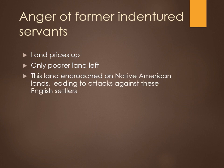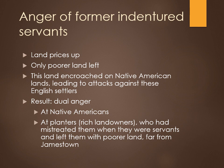They found that the land they could get was bordering on Native American lands, and that led to attacks against these English settlers by Native Americans who were very concerned about their land being encroached upon. The result is that these former indentured servants were angry — angry at two different groups: at Native Americans who had sometimes attacked them, but also at the planters, the rich landowners who had mistreated them horribly when they were servants and then left them with poorer land far from the capital, Jamestown. What they had worked and bled for so long was now being denied them.